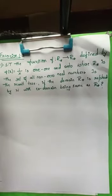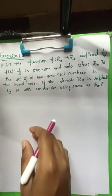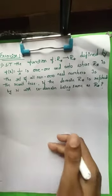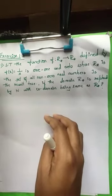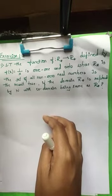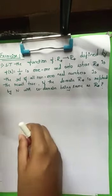Hello students, today we will discuss some more problems related to checking whether a function is one-one and onto. By now we should be clear on the definitions: a one-one function means distinct elements in the domain set go to distinct elements in the co-domain set. For onto, every element in the co-domain set should be an image of some element in the domain — in other words, co-domain should equal the range.